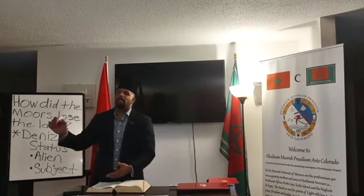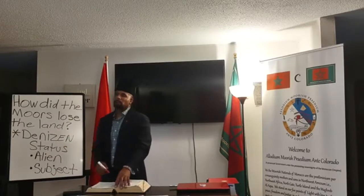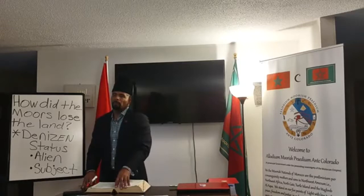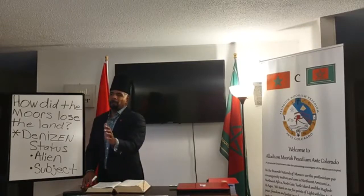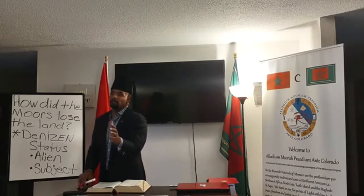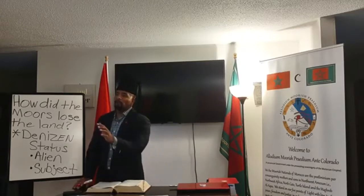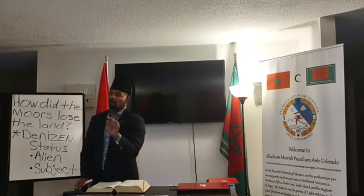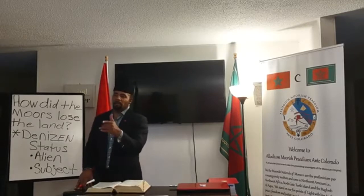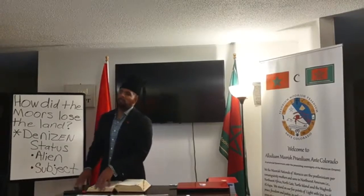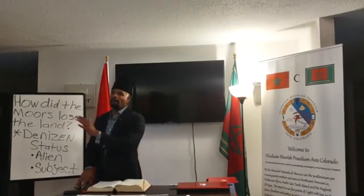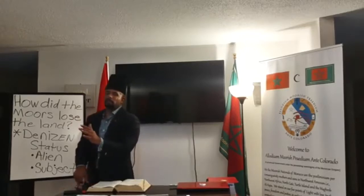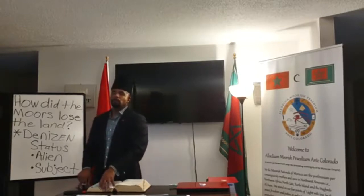Section C, Full Powers: 'means a document emanating from the competent authority of a state designating a person or persons to represent the state for negotiating, adopting, or authenticating the text of a treaty, for expressing the consent of the state to be bound by a treaty, or for accomplishing any other act with respect to a treaty.' In order to have full powers, you must have a state, state constitution, flag, seal, consul of court, birth records, a lordial land claim, and a national trust — because now you can enforce treaties. Moors are running around here rogue with only limited powers because they haven't been following the instructions of the United Nations from the convention of 1969.